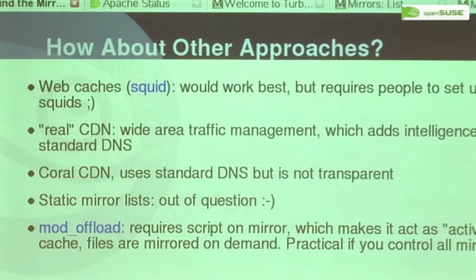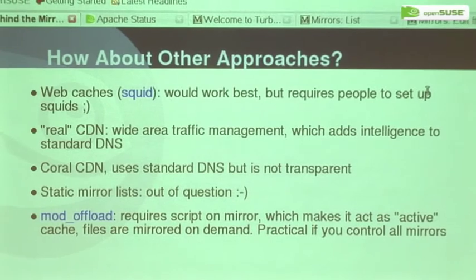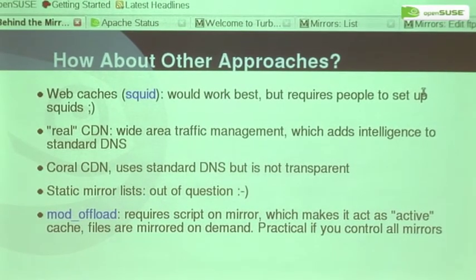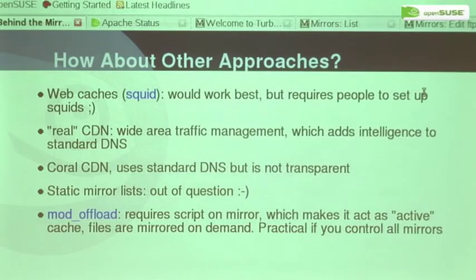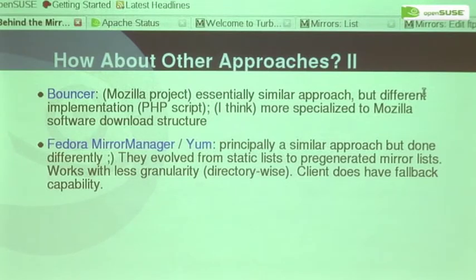I haven't discussed other approaches in detail because time is running out. There are some alternatives: Squid would work well but requires Squid, which probably won't happen. Connectivity networks work by adding intelligence to standard DNS, but static approaches are not more feasible. There's a similar module but it requires interaction with the mirrors. The Mozilla project has a so-called 'bouncer' which is basically a similar approach. The Fedora approach is also very similar, with the difference that they have logic on both the client and server side working together.